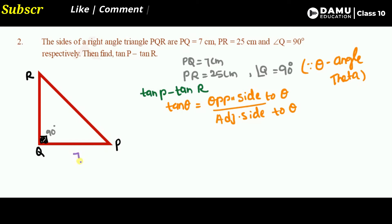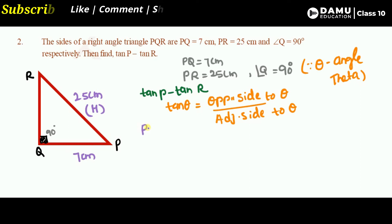We are given PQ equals 7 centimeters and PR equals 25 centimeters. PR is the hypotenuse. We need to find QR. From the Pythagorean theorem we can write a condition.